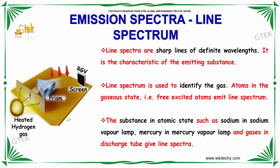If you talk about line spectra, these are sharp lines of definite wavelength. It is the characteristic of the emitting substance. Line spectrum is used to identify the gas. Atoms in the gaseous state — free excited atoms — emit line spectrum. Substances in atomic states, such as sodium in a sodium vapour lamp, mercury in a mercury vapour lamp, and gases in a discharge tube, will give line spectra.